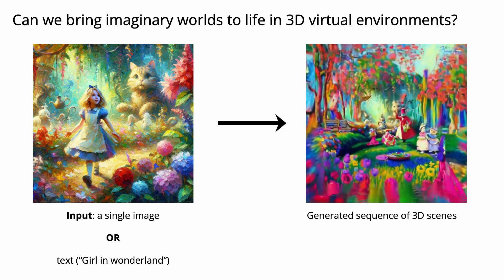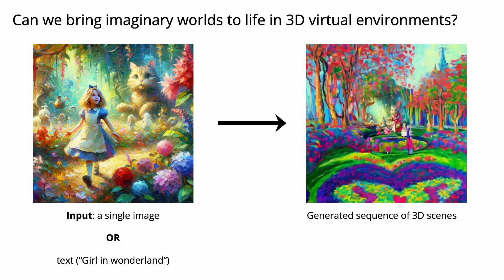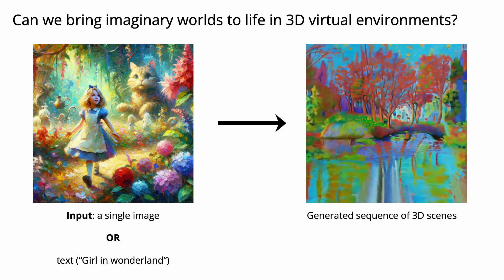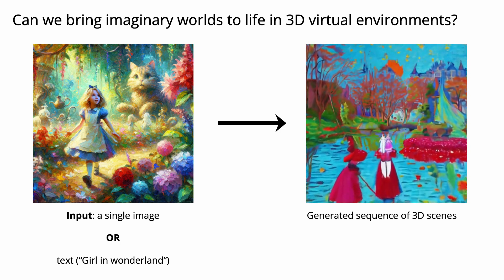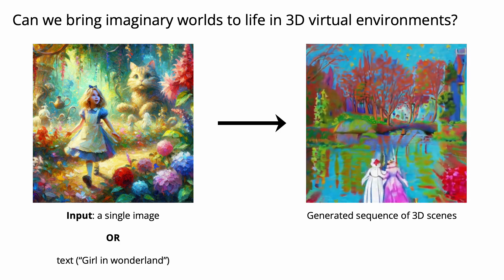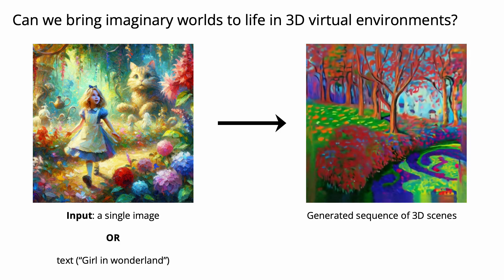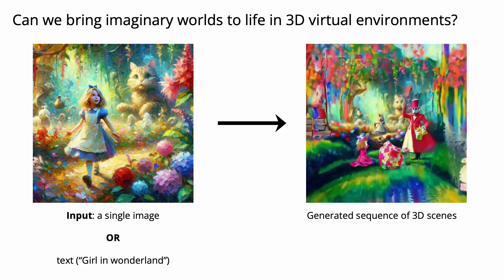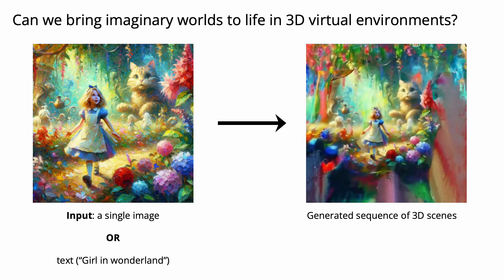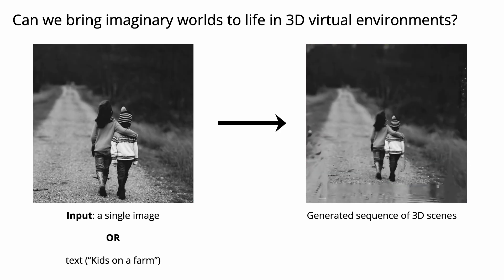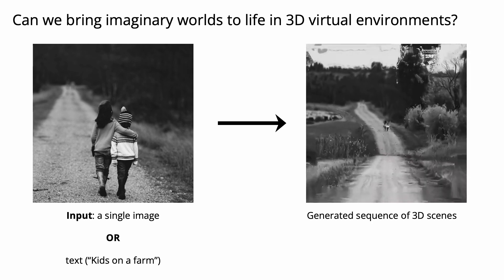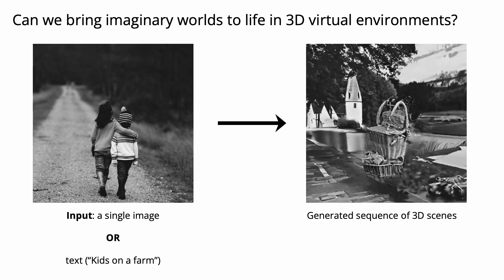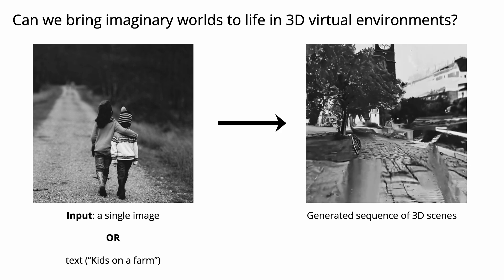For example, given an input image or text, we want to generate a sequence of diverse and naturally connected 3D scenes so that we can render a fly-through video that unrolls and visualizes the imaginary scenes. Rather than imaginary painting, we can also take a real photo as input and generate a set of 3D scenes from it.